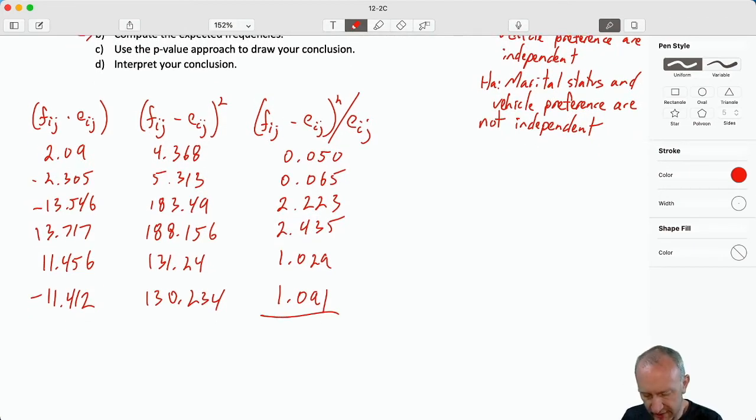All right, and now I'm going to add all of these up. 2.435 plus 2.223, 0.65, 0.05. That gives me my chi-squared of 6.89. We've got our test statistic.